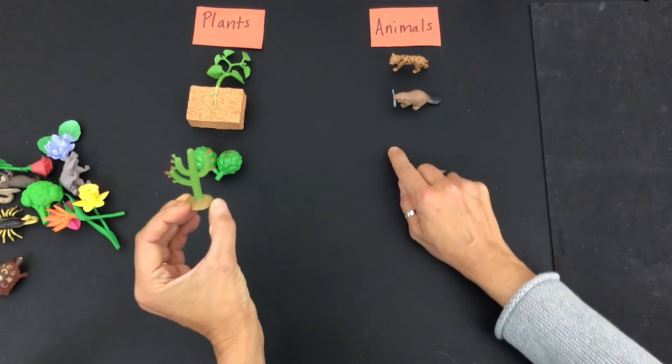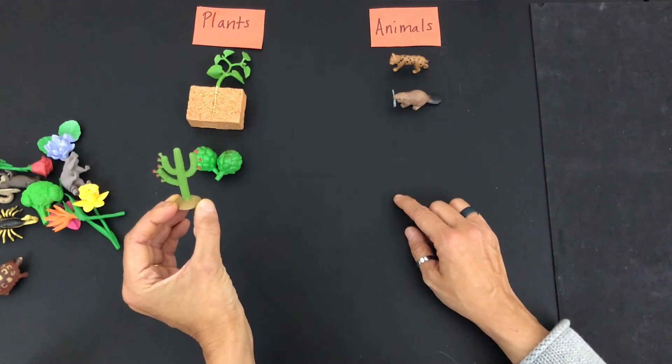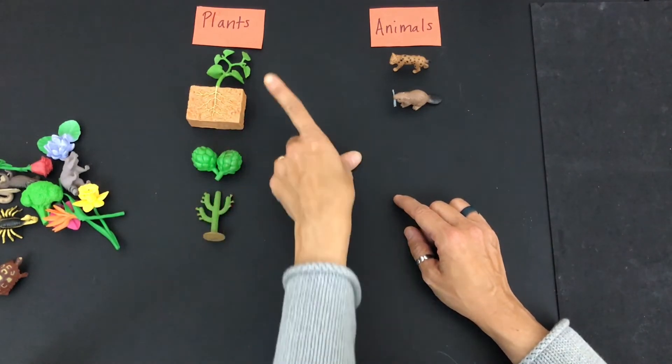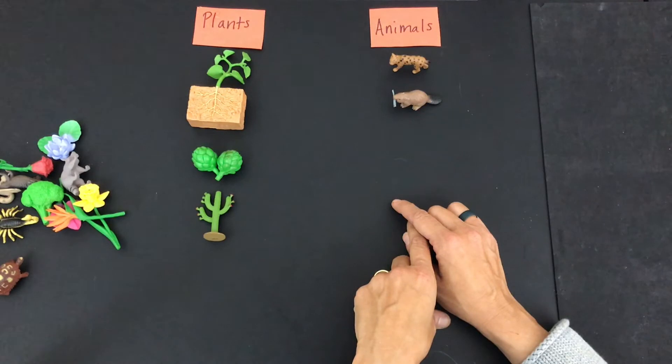What about a saguaro cactus? Plant or animal? What do you think? Plants. What do you notice so far the plants have in common? Yeah, these plants all happen to be green, don't they?